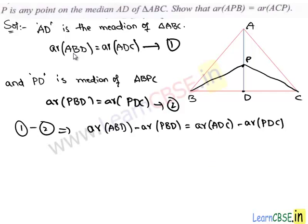That implies area of triangle ABD minus area of triangle BPD is equal to area of triangle ADC minus area of triangle PDC. Here what we get when we subtract area of this triangle ABD from PBD, then we get the area of triangle ABP.